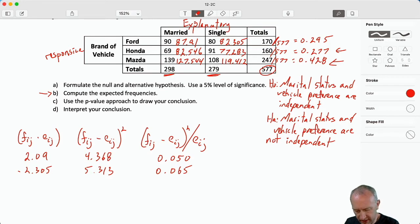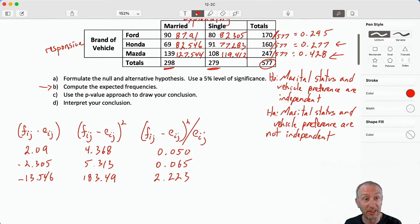Now we're on to Honda: 69 minus 82.546, squared, and divide by 82.546. Sometimes I wonder how many people actually watch all of this or if you're fast-forwarding everything. If I were you, I'd probably fast-forward a lot of these calculations. 91 minus 77.283, 13.717 squared, 188.156, divided by 77.283, 2.435.